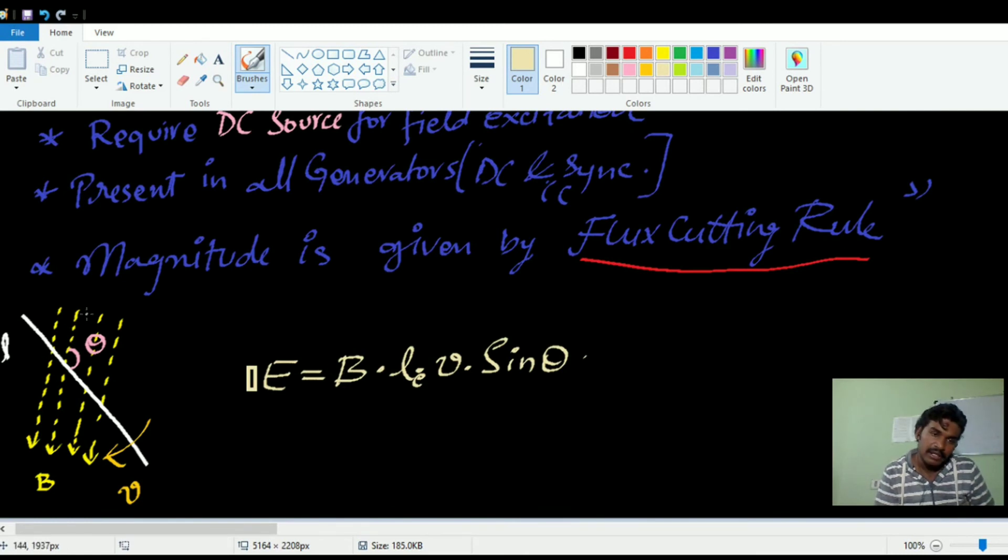This means the length of the conductor which is actually linking to the flux. This portion, shown in red color, is the effective length or active length of the conductor which is actually present in the magnetic flux.